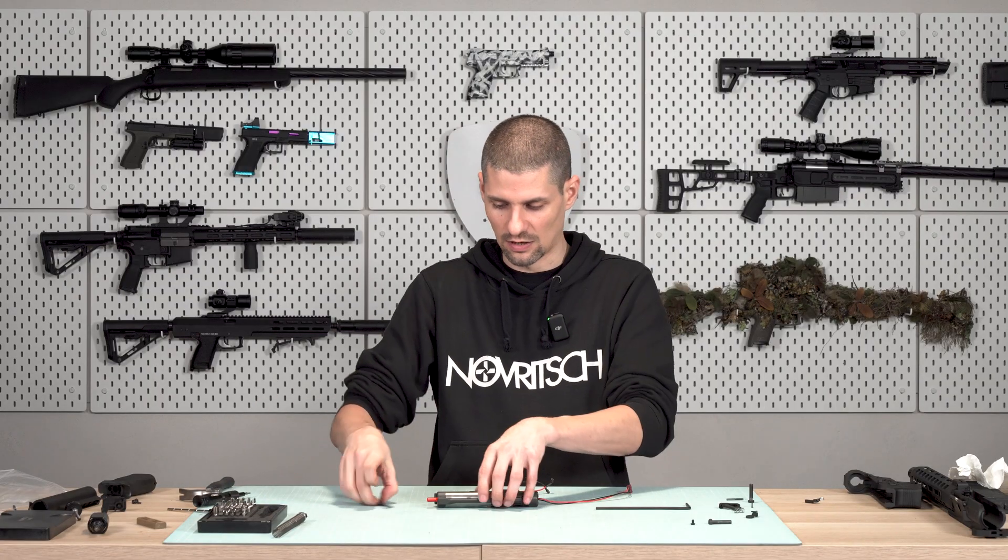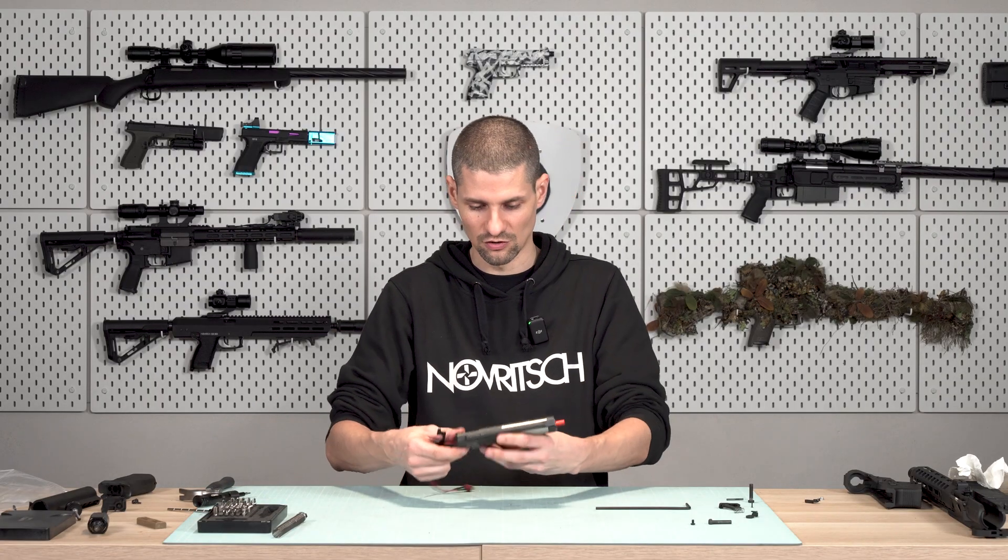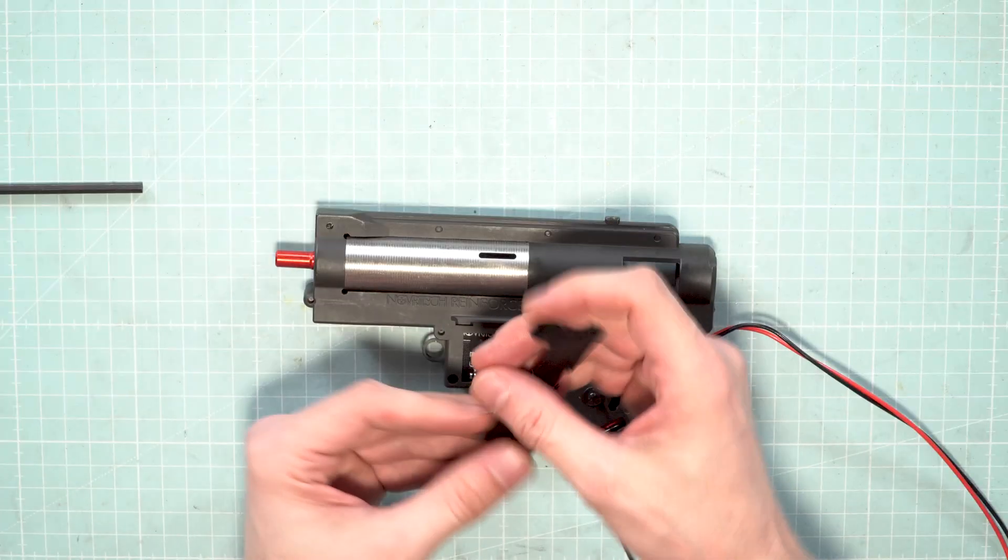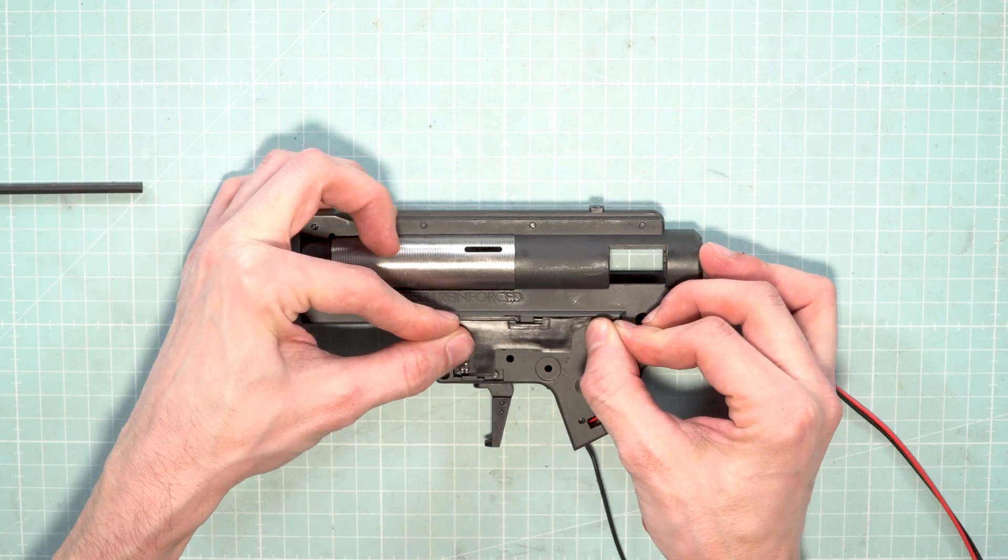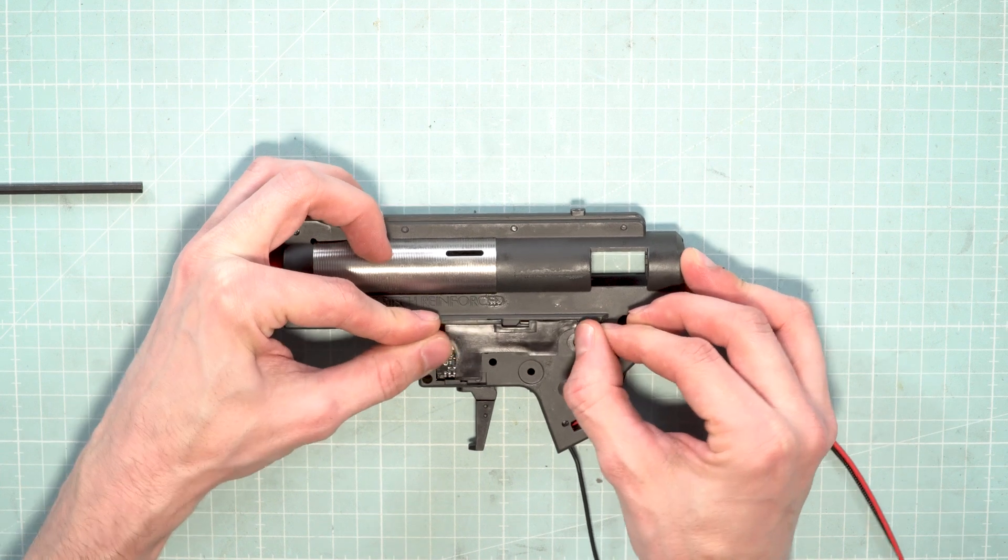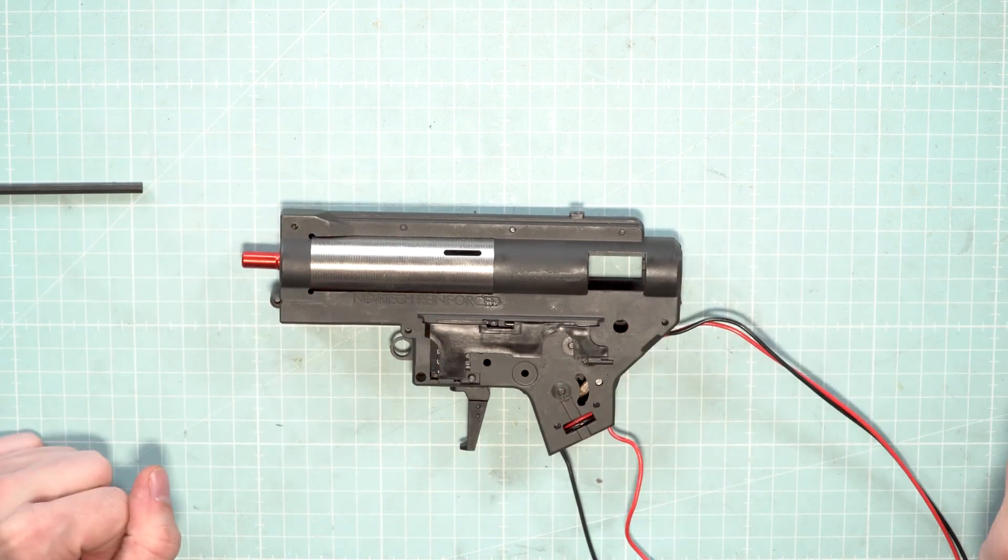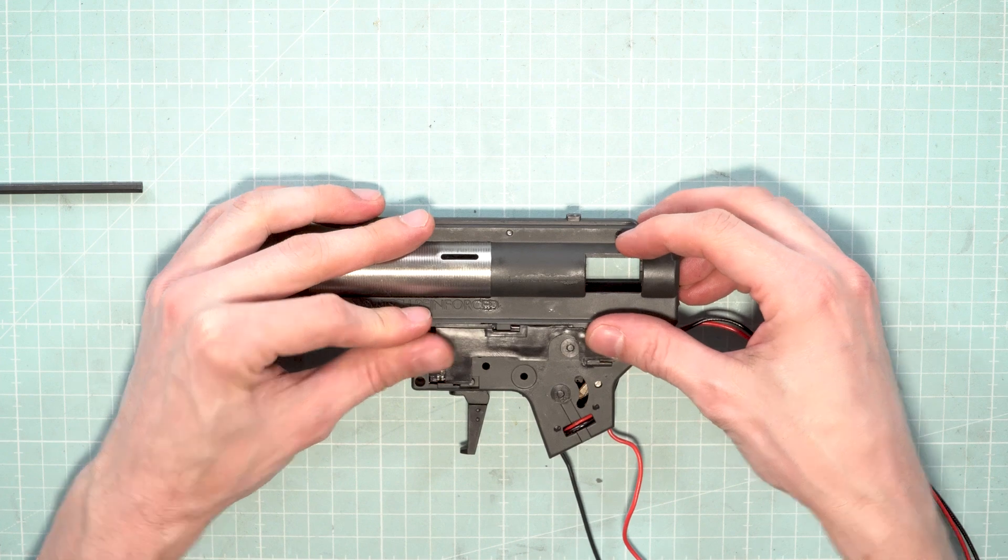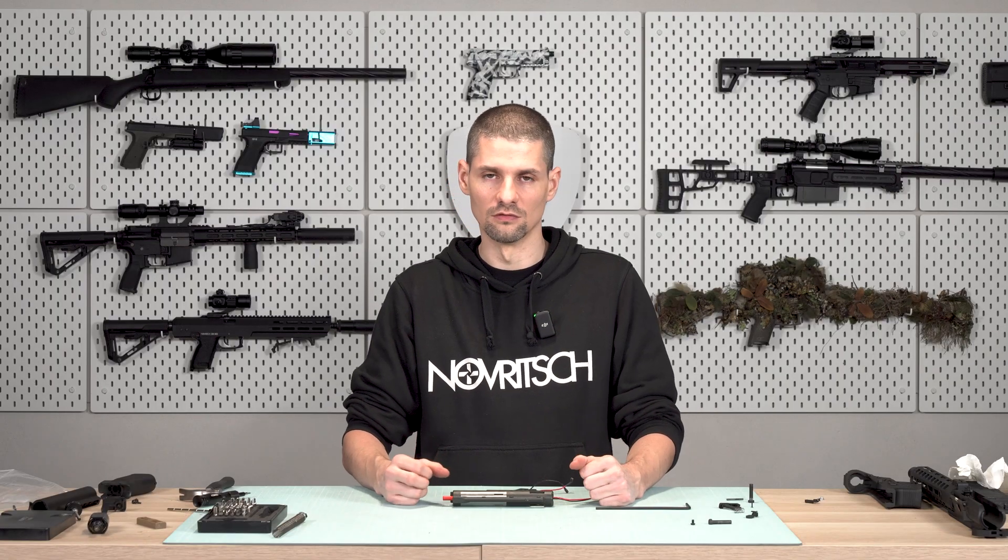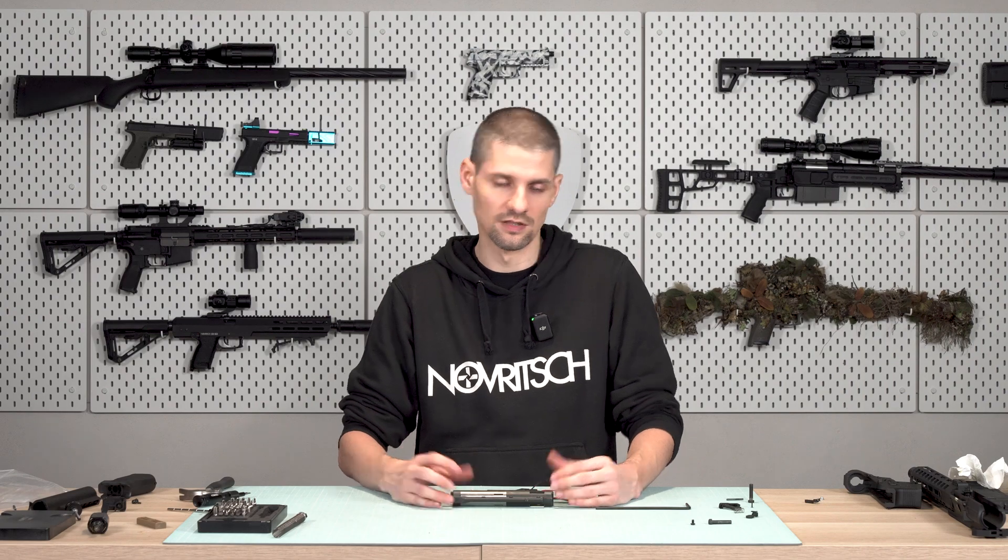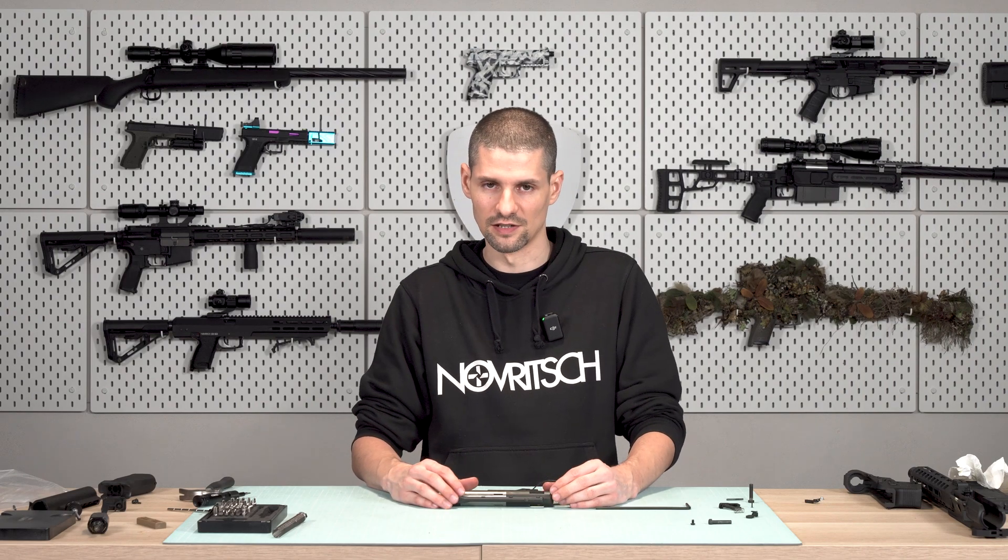From here I purposely left out the selector plate to show you that it can be installed even after the fact quite easily. I just rotate it and press it into the groove. That's it. Make sure that it moves and there you have it. There is nothing that prevents that from getting reassembled. Now we can actually move on to reinstalling the gearbox in the lower receiver and reinstalling the lower receiver itself.